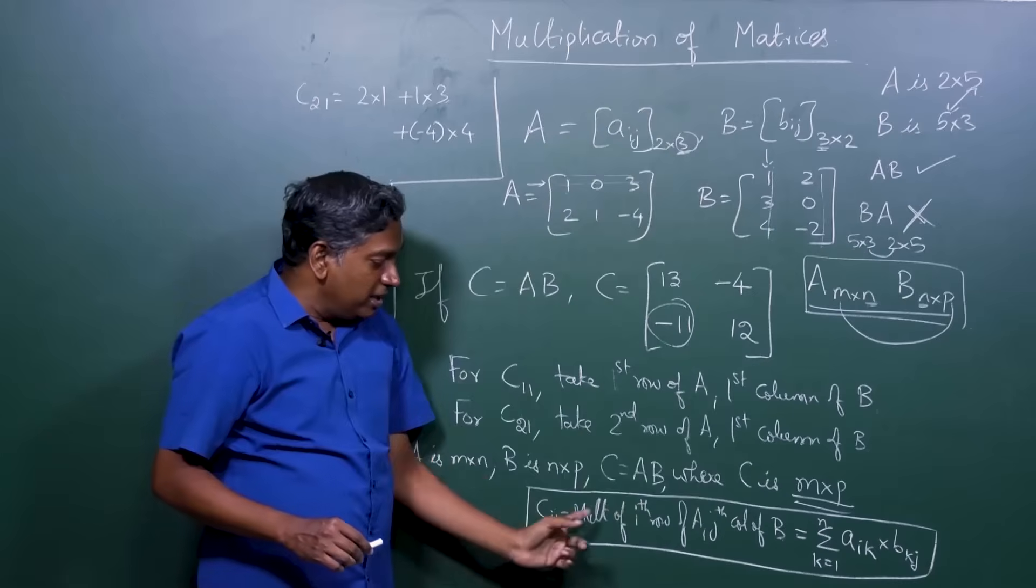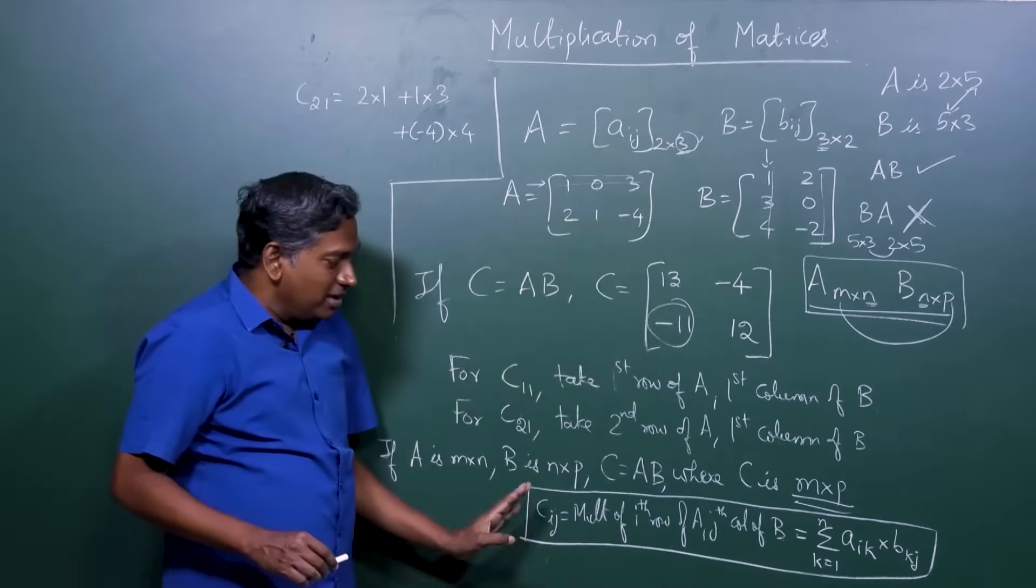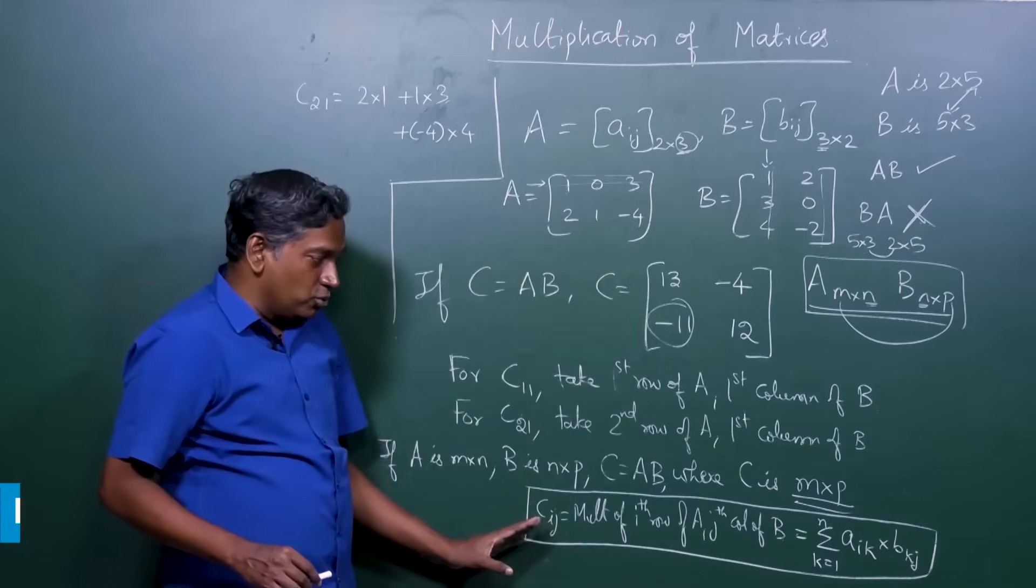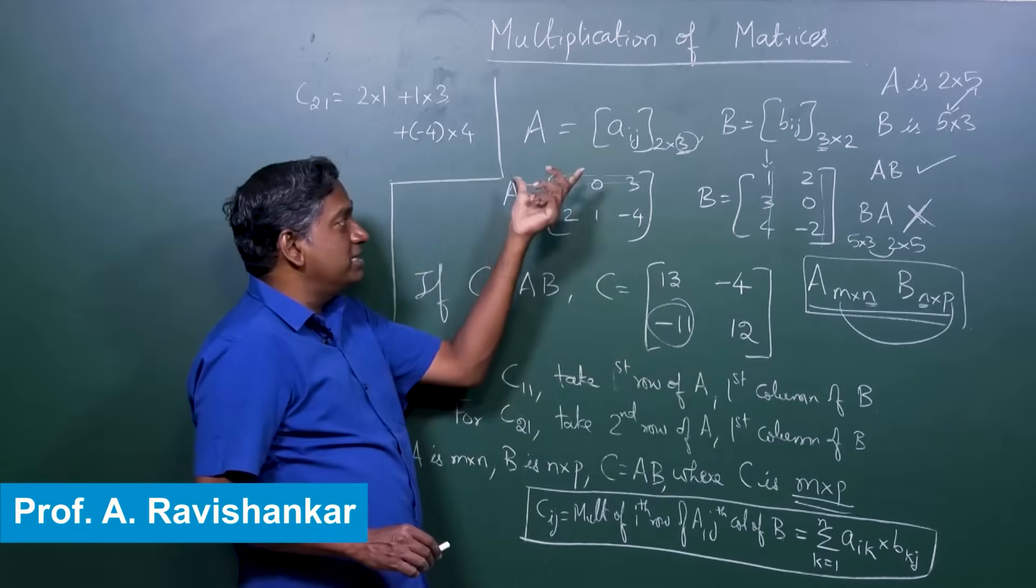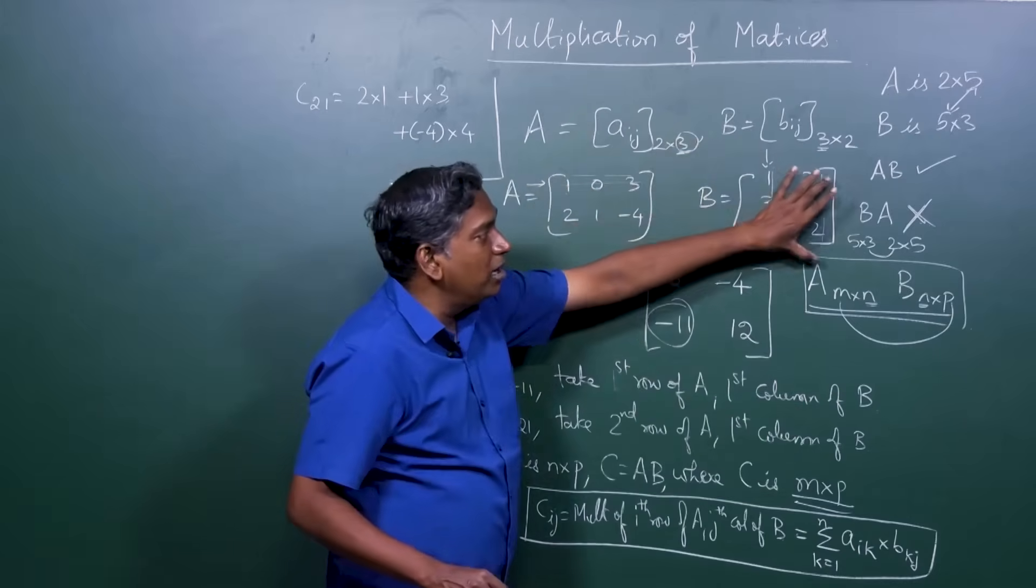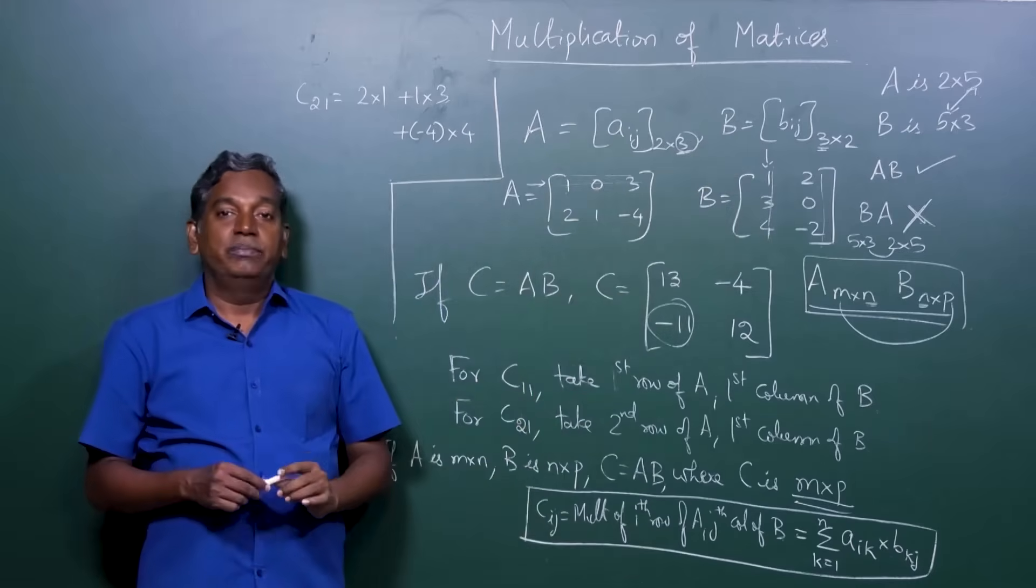And when you do want to multiply, the entries are obtained by this equation. This is confusing sometimes to understand what is this sigma and all that. But a better way to understand is take each row of A, multiply by each column of B. That's how you're going to get the resultant matrix.